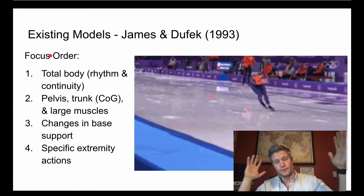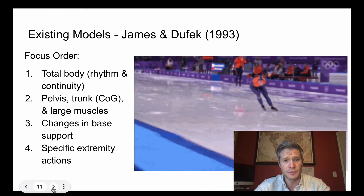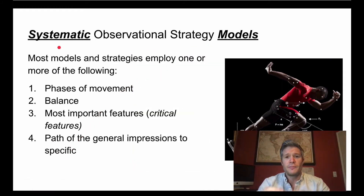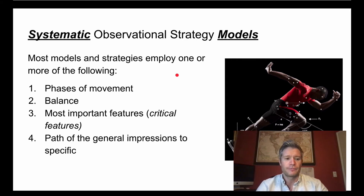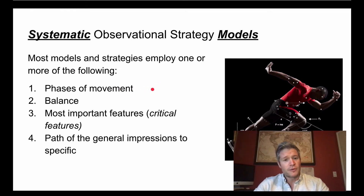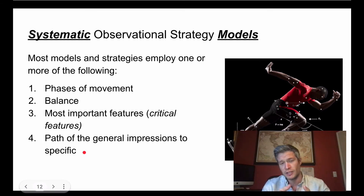The general focus order goes from big picture to more and more narrow — that's the observation plan this model is built on. The key points: it's systematic with a plan and strategy built in. Key elements include phases of movement, balance, keying in on critical features, and a path from general impressions to specific movements for observation.